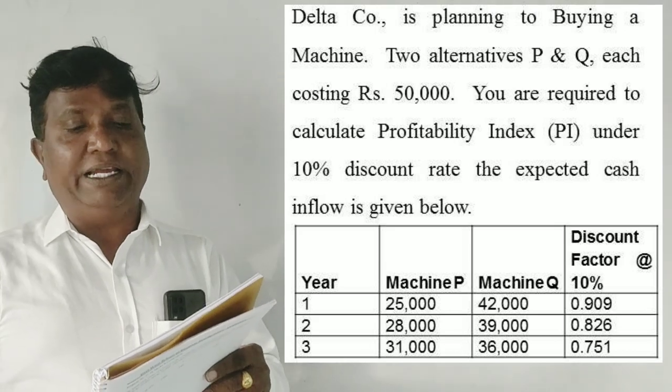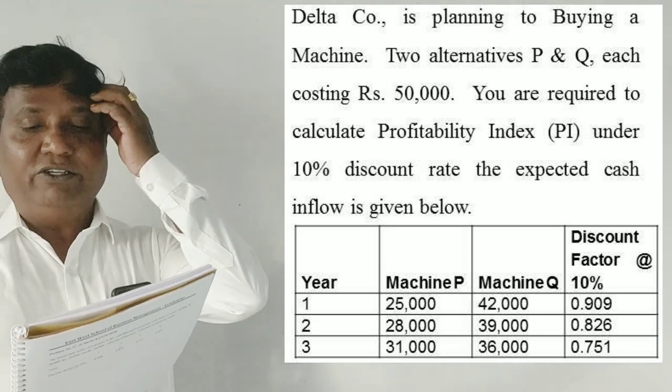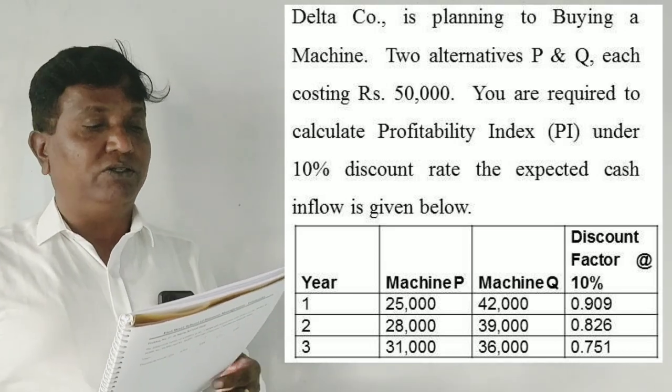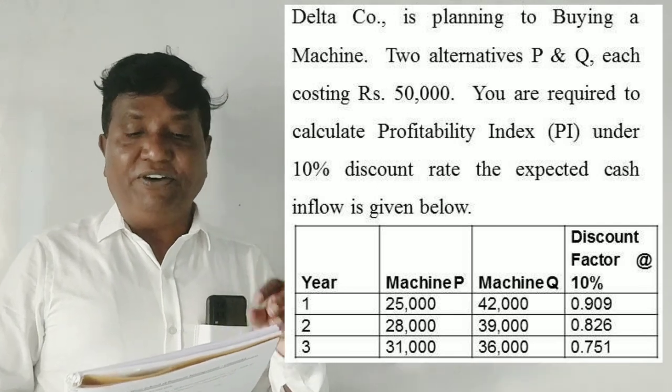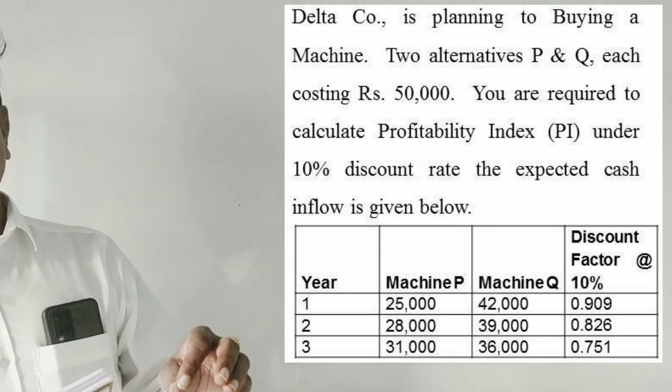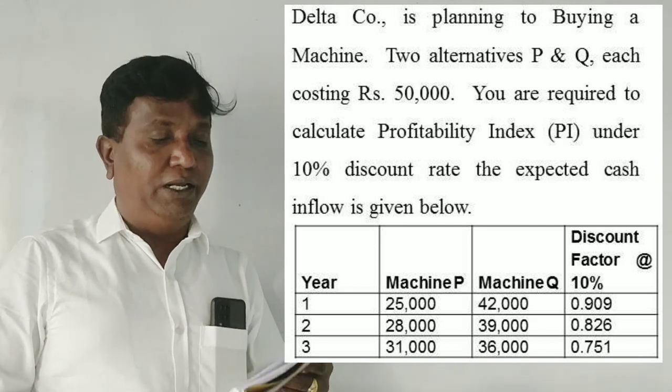Delta Company is planning to buy a machine. Two alternatives, P and Q, each costing Rs. 50,000. You are required to calculate profitability index under 10% discount rate. The expected cash inflow is given below.